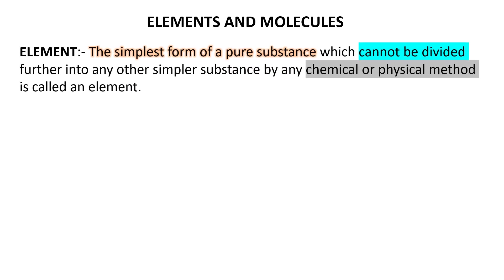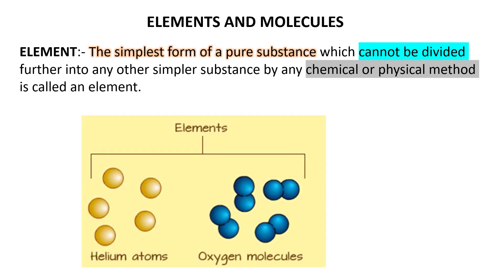Elements and molecules. Every matter is made up of elements. An element is the simplest form of a pure substance which cannot be divided further into any simpler substance by any chemical or physical method. For example, gold is an element, silver is an element, carbon is an element, helium and oxygen — all these are elements.